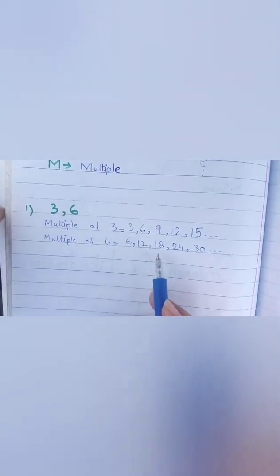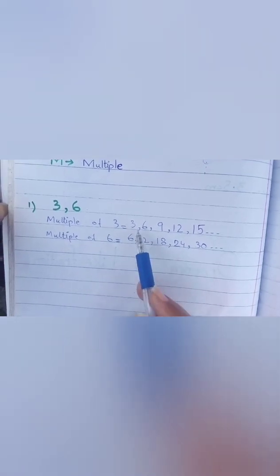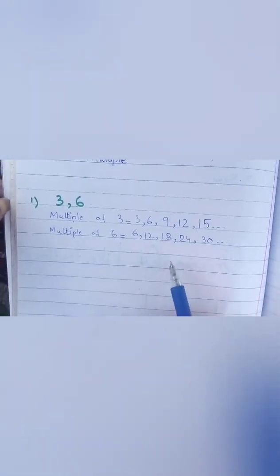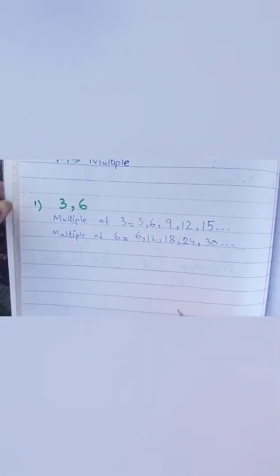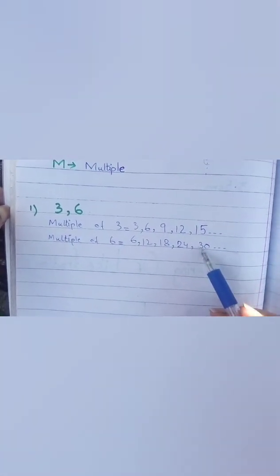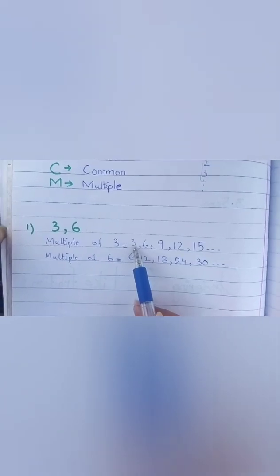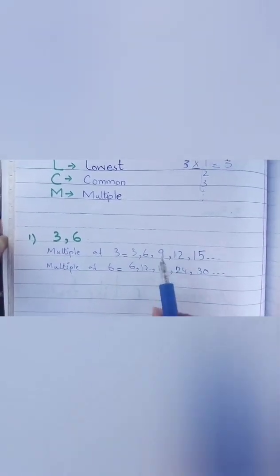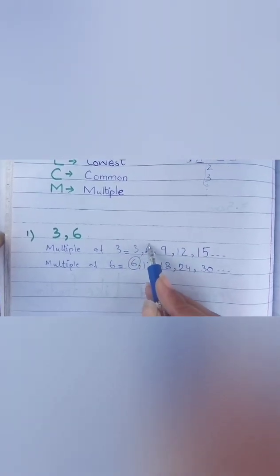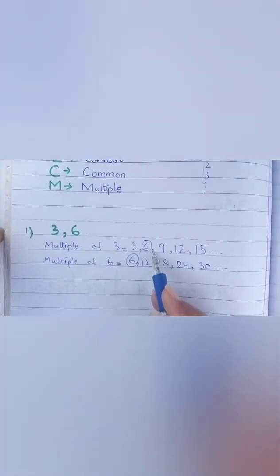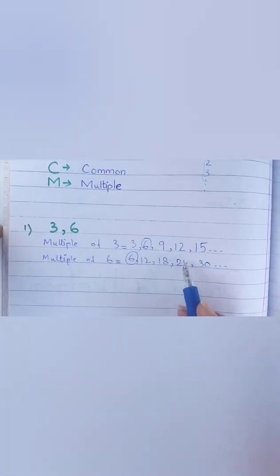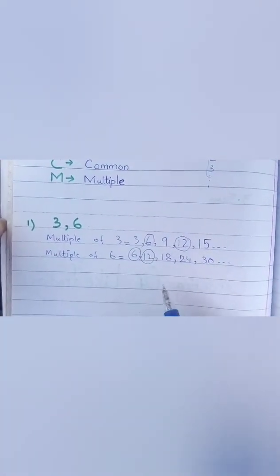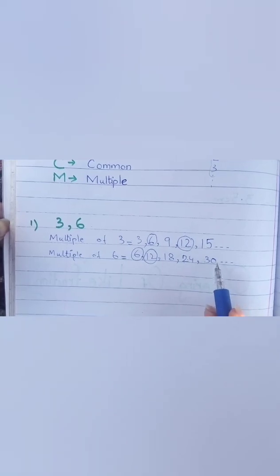Ab humne check karna hai. Pehle multiple karke nikaale hain, five five multiples dono digits ke nikaale hain. Ab check karenge ki jo hum digit hai jo dono mein common hai. Sabse pehle three ke paas hai six, six three ke paas bhi hai, lakin six three ke paas hai. So you can circle this and check out if there is another multiple.